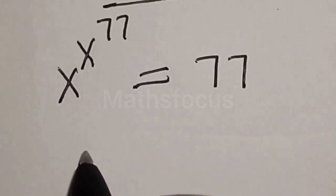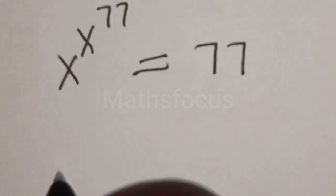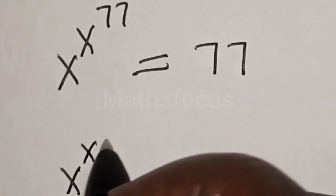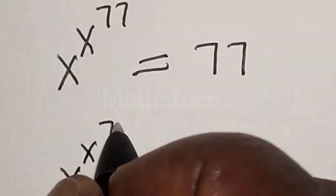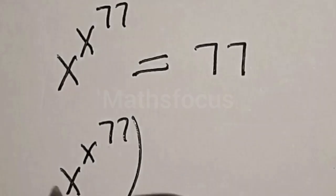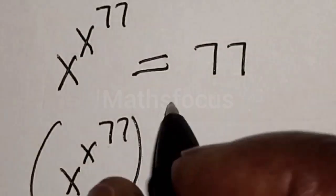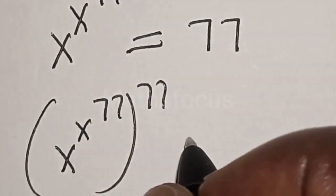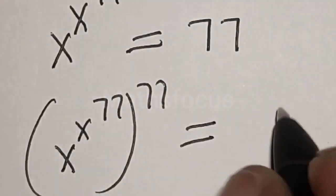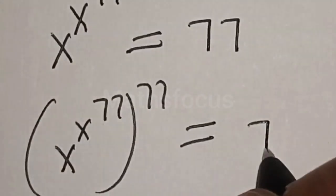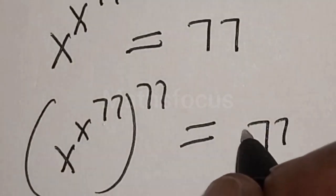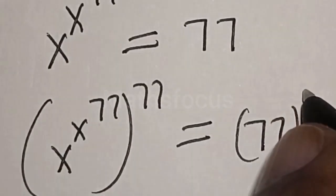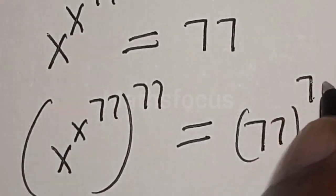Let's multiply the power of both sides by 77. That gives us s raised to the power s raised to the power 77, all raised to the power 77, is equal to 77 multiplied by 77.